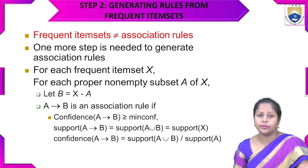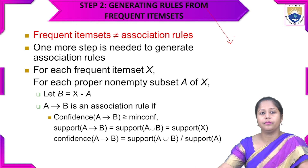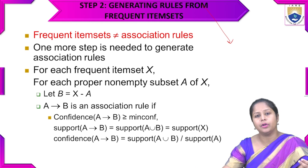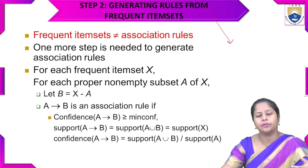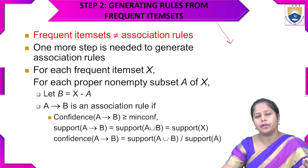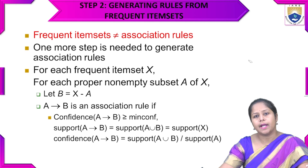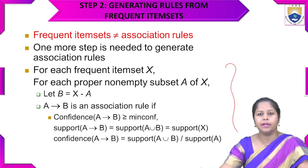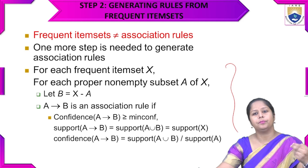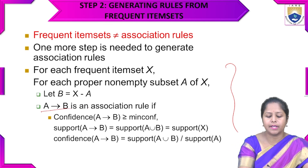In step 2 of the Apriori algorithm, we generate rules from the different frequent item sets. The frequent item set is not equal to the association rules — frequent item sets are the probability of items occurring in one transaction. Association rules are different from that, so one more step is needed to generate the association rules. For each item set X, for each proper non-empty subset A of X, let B equal X minus A. A → B is an association rule if the confidence of A → B is greater than or equal to the minimum confidence.